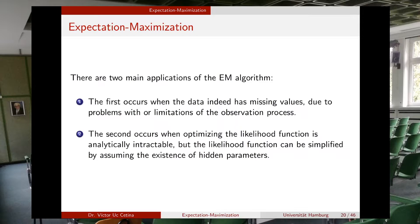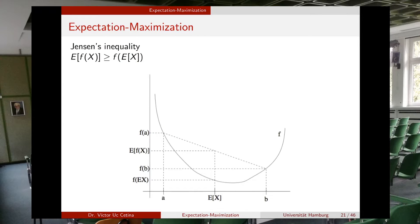In the second case, the likelihood function can be simplified by assuming the existence of some hidden parameters, also called latent parameters or variables. To understand the process of expectation maximization better, it is important to review a result called Jensen's inequality.